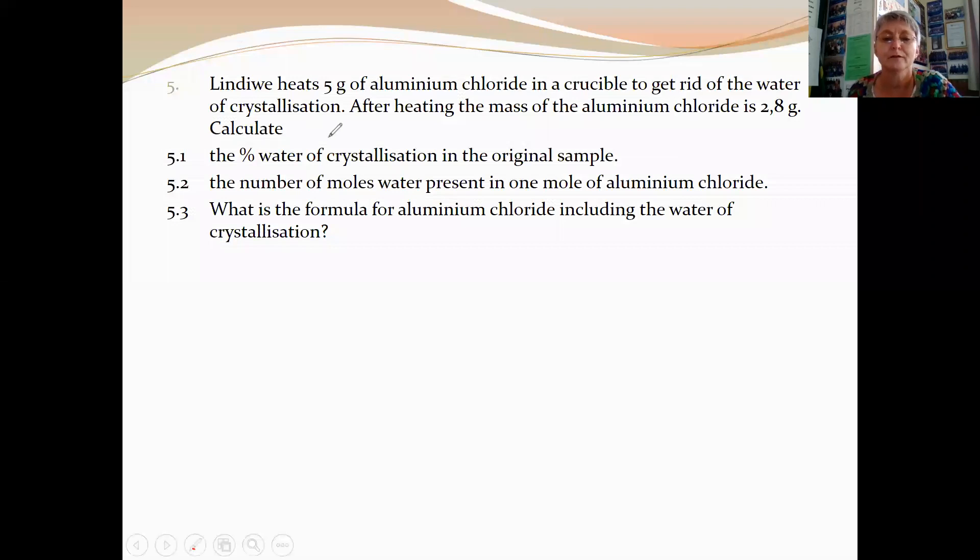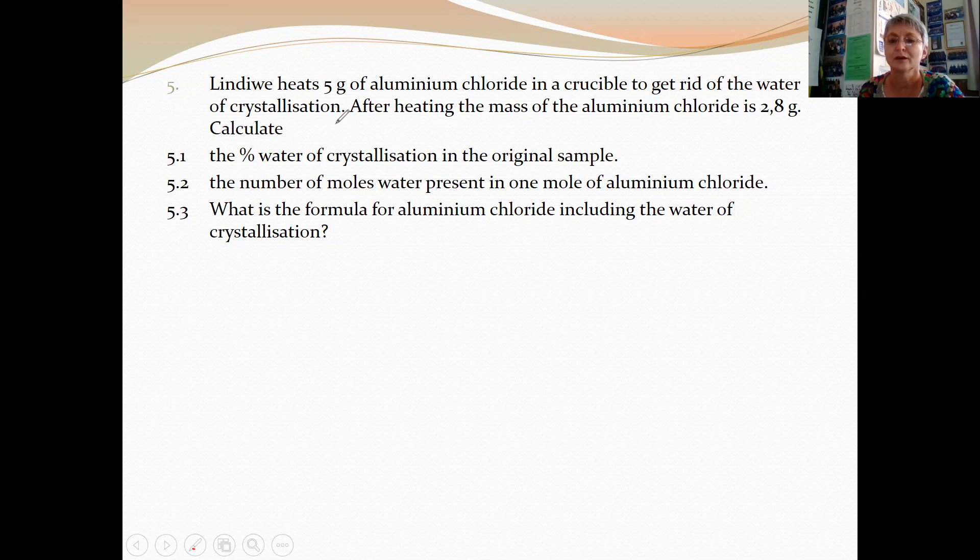Lindiwe heats five grams of aluminium chloride in a crucible to get rid of the water of crystallization. After heating, the mass of the aluminium chloride is 2.8 grams. So the difference between the five grams and the 2.8 grams is the water that evaporated during the heating.